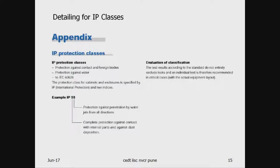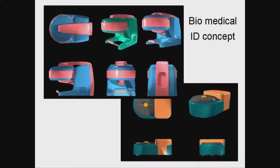There is IP protection — or Index of Protection — as per IEC 60529. What do these classifications mean and how do you evaluate them? I try to explain this a little in these lectures.